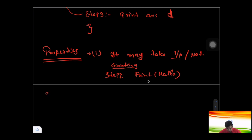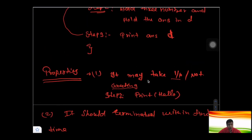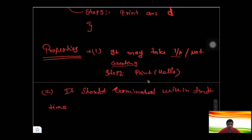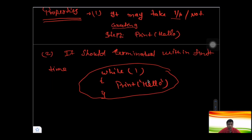The second property is: it should be terminated within a finite time. If you write a loop that never ends — for example, a while loop with condition '1' that prints 'Hello' forever — that is not an algorithm, because an algorithm must terminate within finite time.